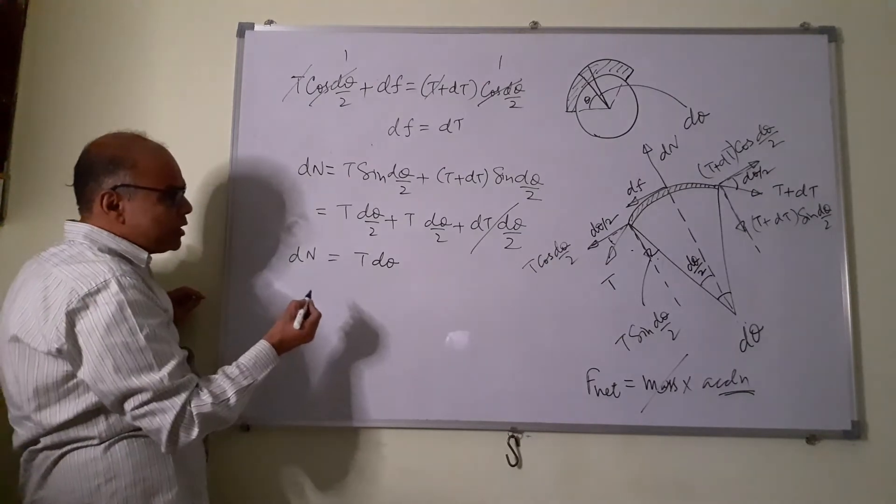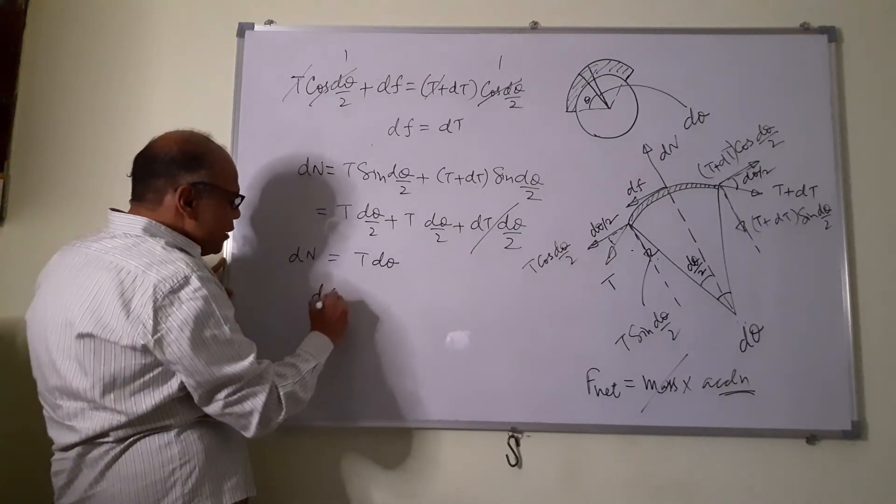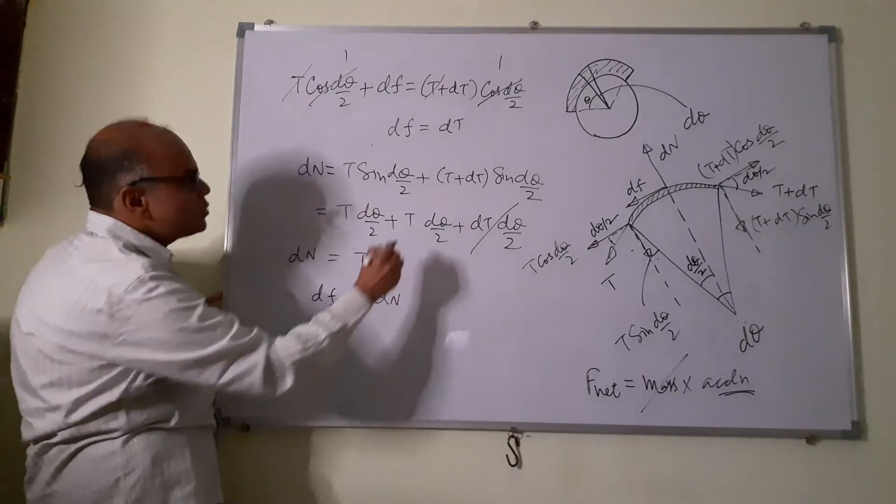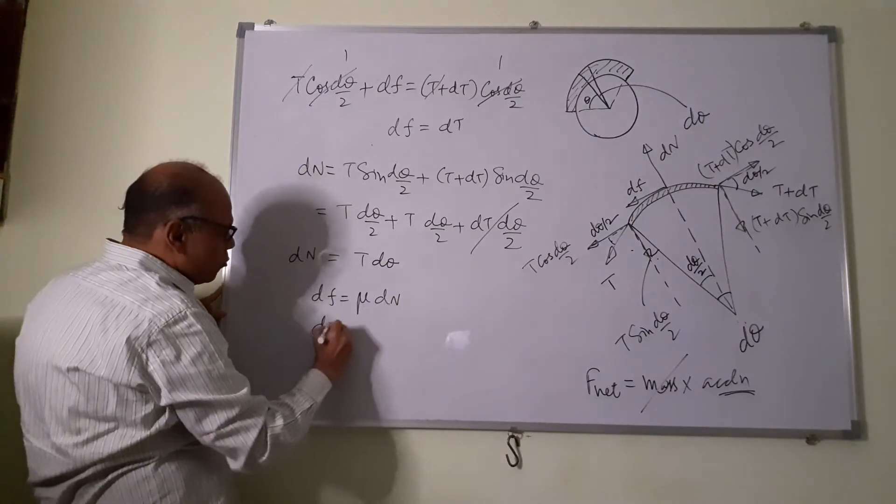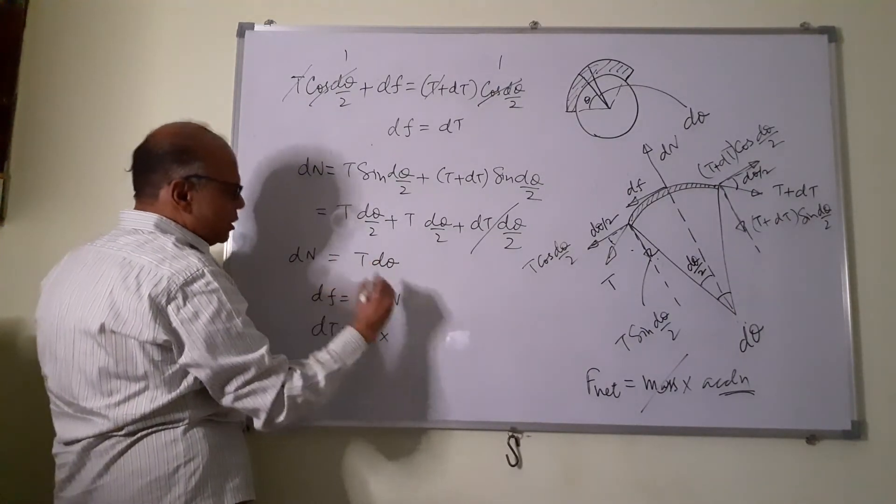So now because we said there is slip, we proved it in the beginning. We can say Df is equal to mu into Dn. Df we saw was Dt, and Dn is nothing but T d theta.